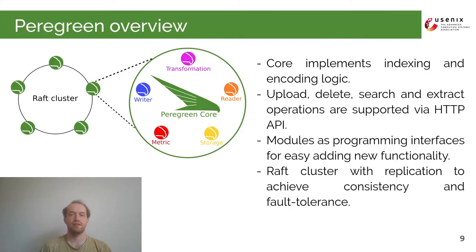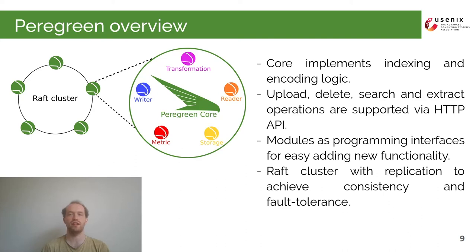These methods of index building and data encoding form the basis of the distributed time series database called Peregrine. It has three main parts. The first is the core, which implements indexing and encoding logic and provides an API for working with the data. The second part is the modular system that allows easily adding new ways of reading and writing data, new backend storages, metrics, and transformations. The third part is the cluster, which enables distributed and fault-tolerant operation of Peregrine with the help of the Raft consensus algorithm.